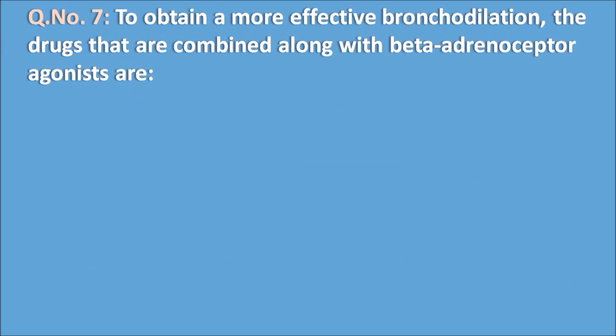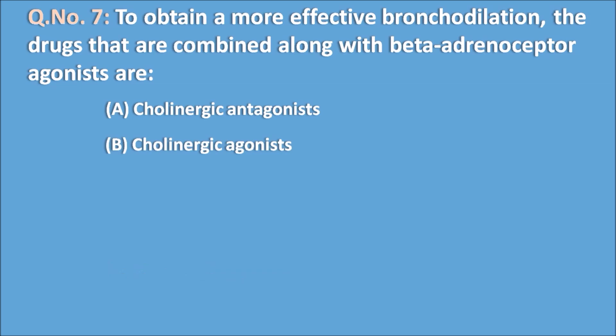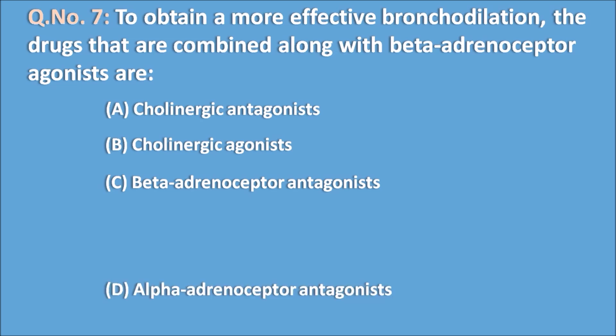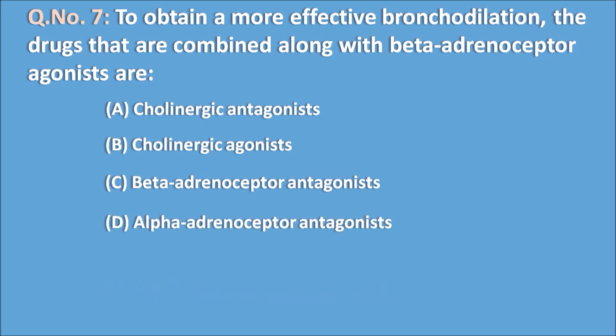Question seven: to obtain more effective bronchodilation, the drugs combined with a beta adrenoreceptor agonist are A. cholinergic antagonist, B. cholinergic agonist, C. beta adrenoreceptor antagonist, and D. alpha adrenoreceptor antagonist. The right answer is the cholinergic antagonist — a parasympatholytic combined with a sympathomimetic. The parasympathetic system produces bronchoconstriction and the sympathetic system produces bronchodilation, so they act oppositely at the lungs.